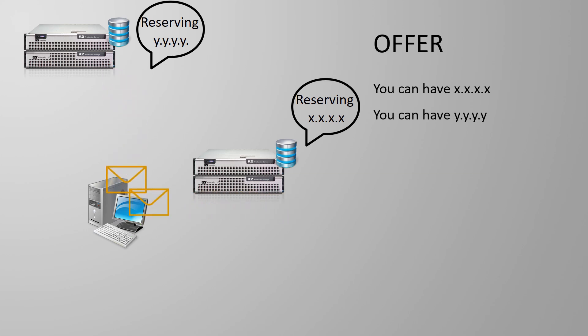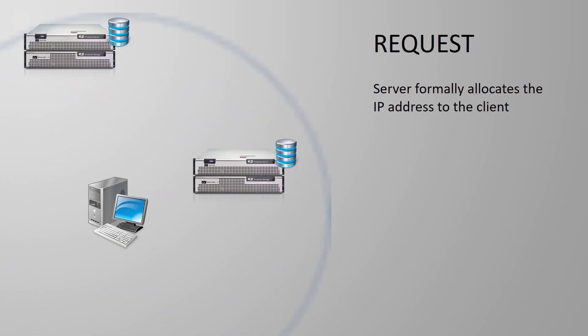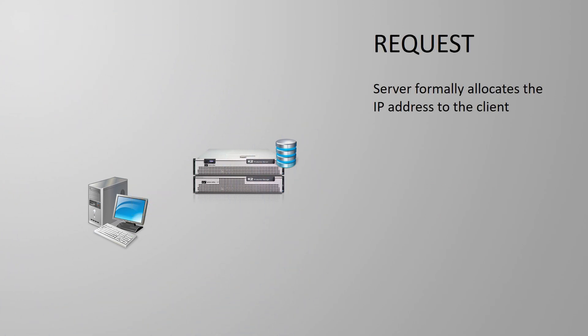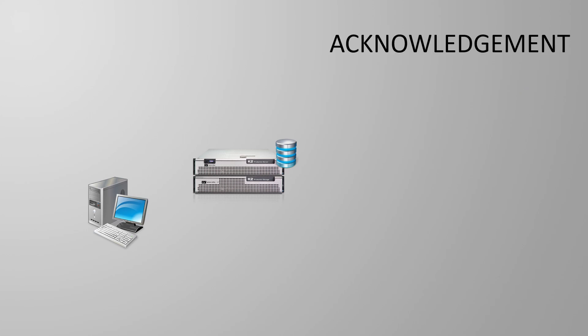Sometimes the offer is sent as a broadcast and sometimes as a unicast message. If you're interested in why, have a look at RFC 2131. When there is more than one DHCP server, the client will get more than one offer. It will select one and formally ask permission to use it by broadcasting a DHCP request message. The server finishes the process by sending a DHCP acknowledgement message, officially allocating the IP address.